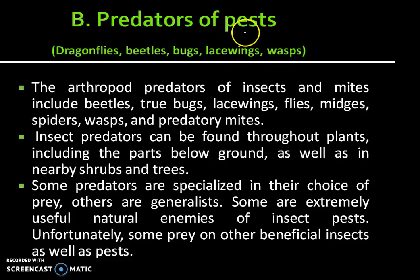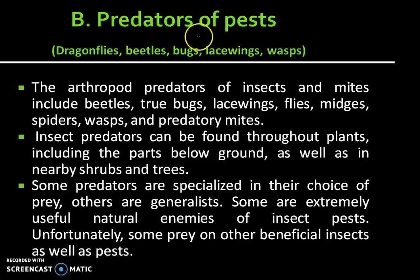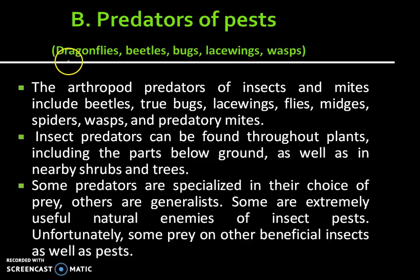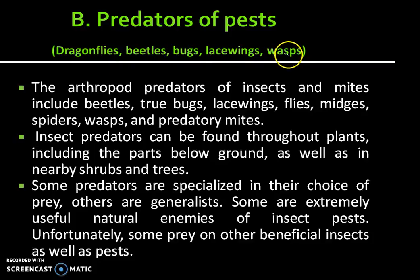The next category of beneficial insects is predators of pests. Pests are the harmful insects. These predators feed on pests and kill them. This category includes dragonflies, beetles, bugs, lacewings, and grasshoppers.